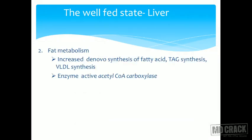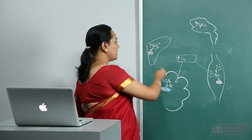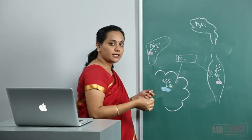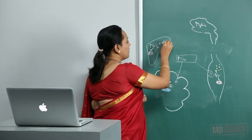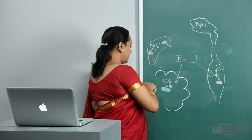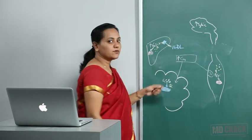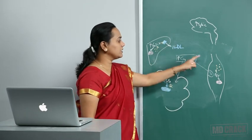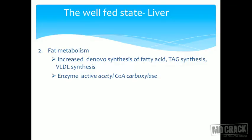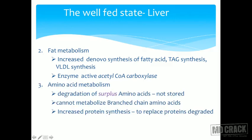Regarding fat metabolism in the liver in the well-fed state: glycolysis is occurring, TAG synthesis takes place, and there is increased release of VLDL, which transports TAG to adipose tissue and muscle. There is increased de novo synthesis of fatty acids, TAG synthesis, and VLDL synthesis. The active enzyme is acetyl-CoA carboxylase. For amino acid metabolism, there is degradation of surplus amino acids and increased protein synthesis, including synthesis of plasma proteins that are released into circulation.